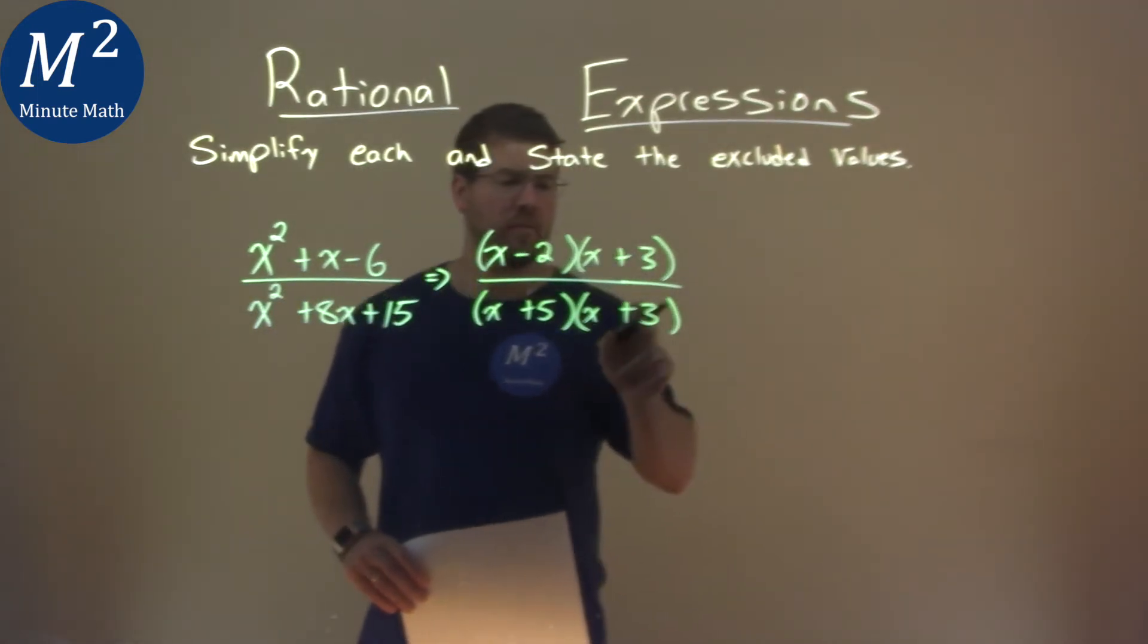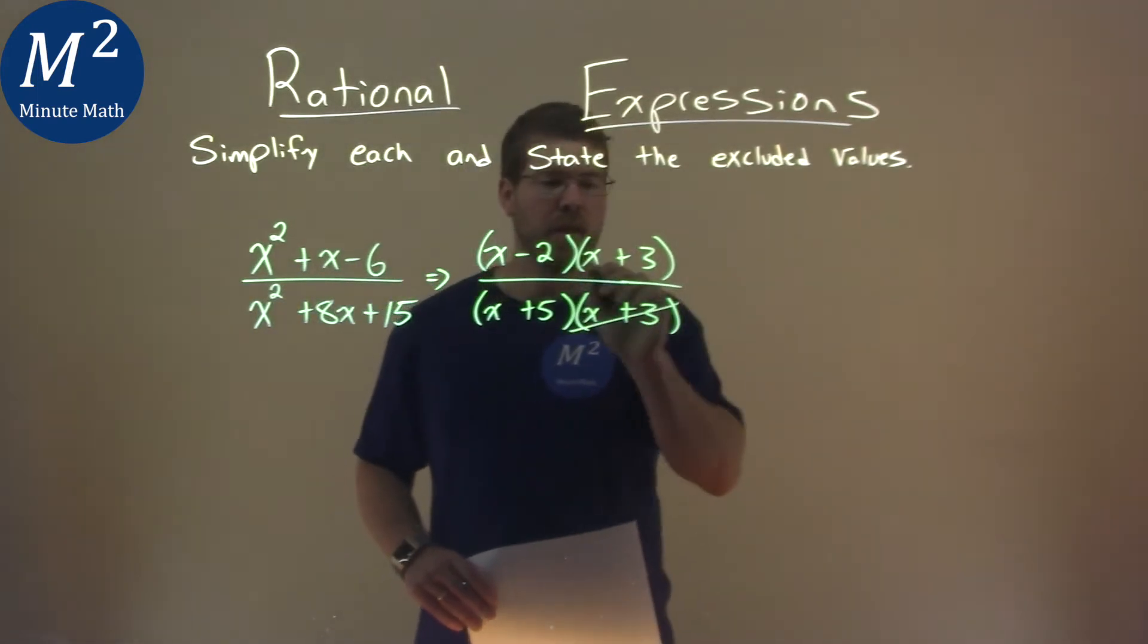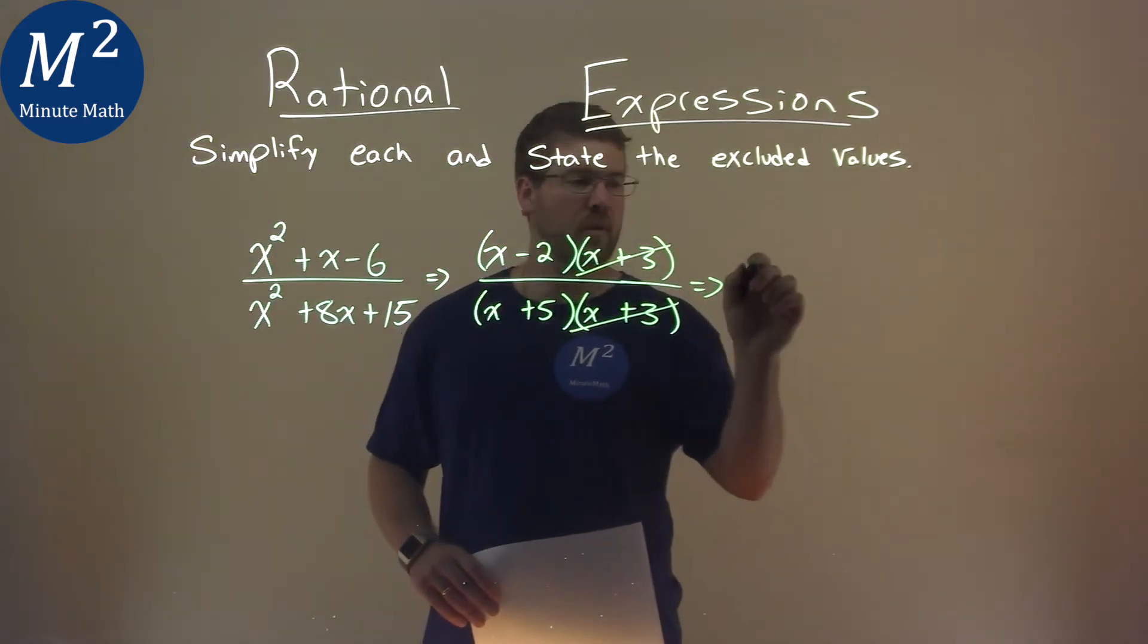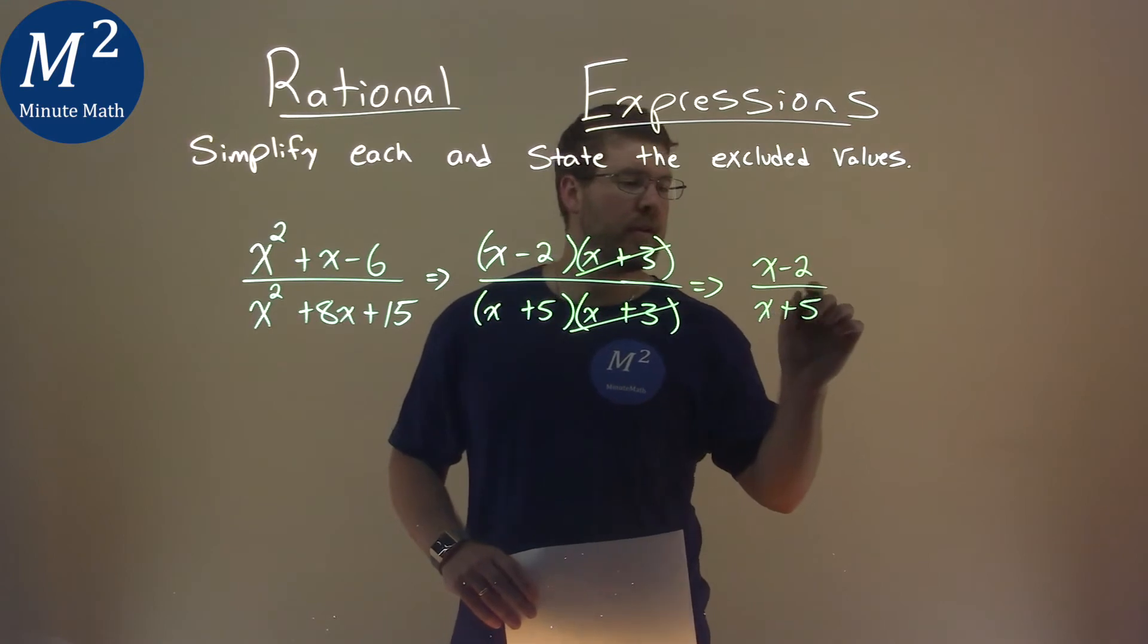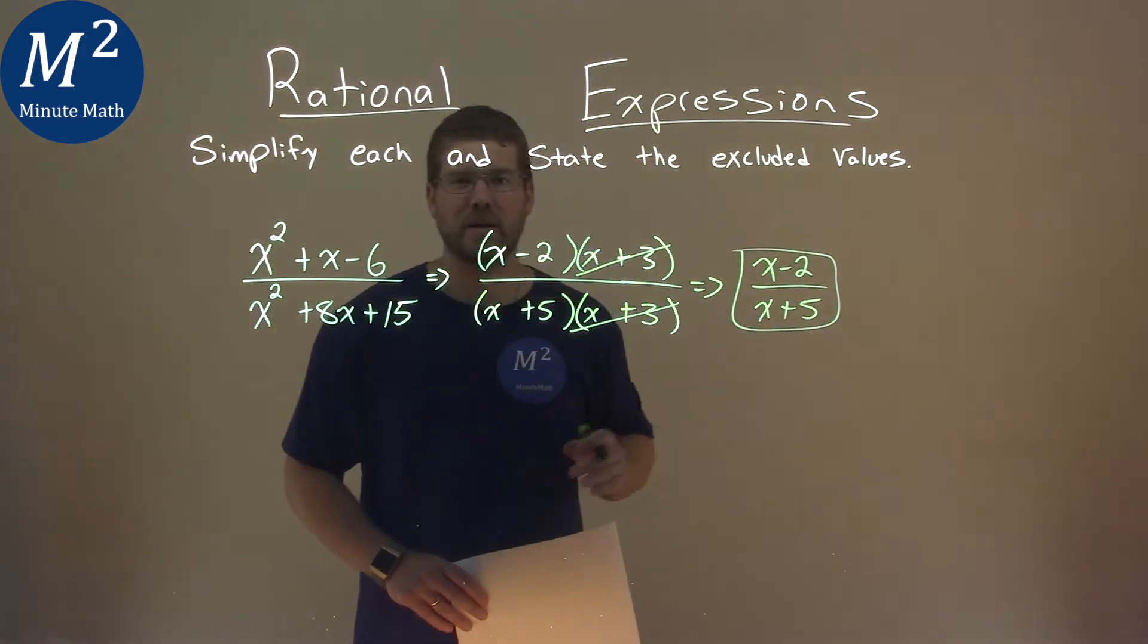Now luckily for us, we see an x plus 3 over an x plus 3. They can cancel each other out, and so we have an x minus 2 in the numerator and an x plus 5 in the denominator, and that is our expression simplified.